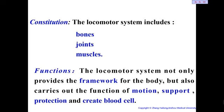Hello everyone, now we'll continue to study the next part, part one. In this class I'll introduce the first term in our body — the locomotor system. First I'll introduce the composition of the locomotor system. In the locomotor system we have three parts: the first one is bones — we have 206 bones in our body. The second part is the joints; connected bones form a joint and the joints can move. The third one is muscle — the muscle is the power source.